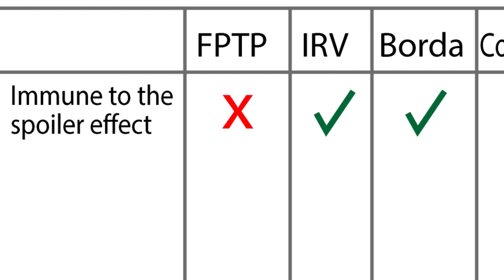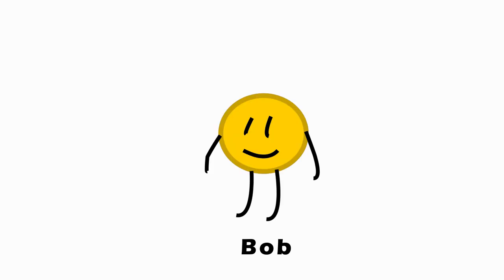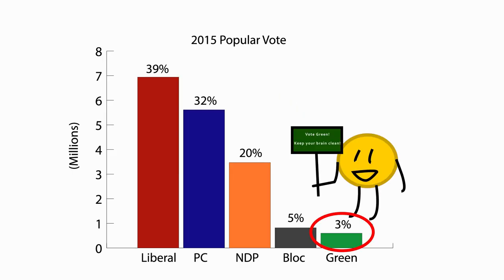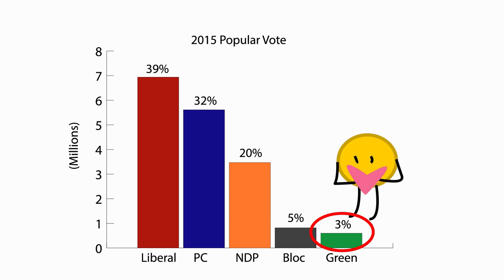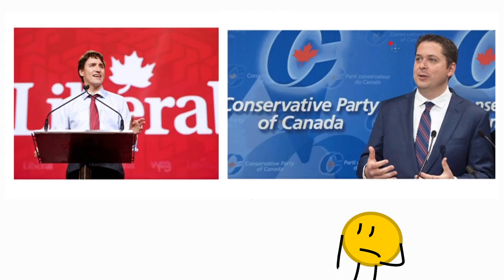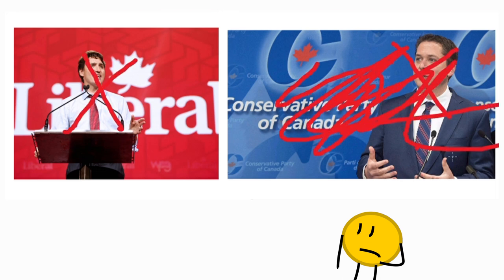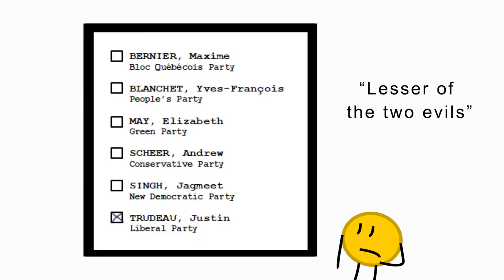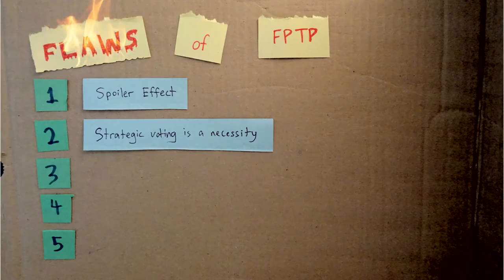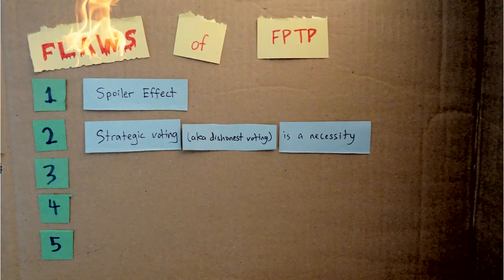If you don't see how this is a problem, let's follow one voter during the 2019 election — Bob. Bob's heart lies with the Green Party, but he's faced with the reality that they have no chance of winning. No matter how much he likes the Green Party, he doesn't want to waste his one vote on a party that has no chance of winning. Instead, he looks at the two biggest parties. He doesn't really like either of them, but dislikes the conservatives more. So he votes for the liberals in the hope of preventing the conservatives from winning. This is called strategic voting — not voting for the party you honestly like the best. And in First Past the Post, strategic voting is a necessity.